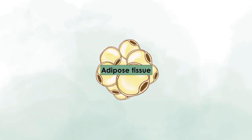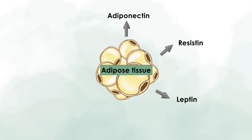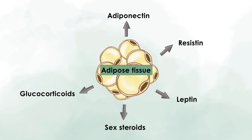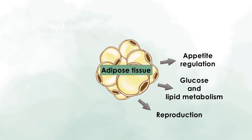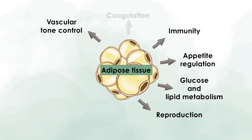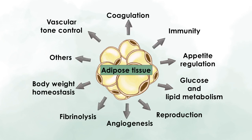Looking at the adipose tissue from lean people, it produces beneficial molecules such as adiponectin, resistin, leptin, sex steroids, and glucocorticoids, among others. These are tightly associated with a wide range of functions in our organisms, including appetite, glucose metabolism, reproduction, vascular tone control, immunity, and coagulation, among others.